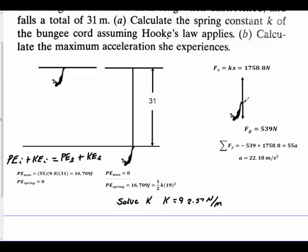We can apply this at the bottom where she stopped because her velocity is going to be zero, so she's going to have max acceleration. The spring constant is going to be the 92.57 times the 19 that she stretched. That's going to be the force going back up. All we have to do now is sum forces in the y direction, set that equal to mass times acceleration, and we will find that her acceleration is 22.18 meters per second squared.